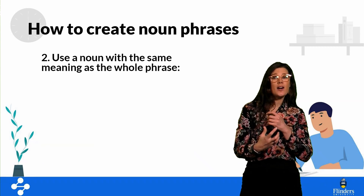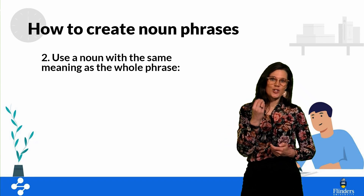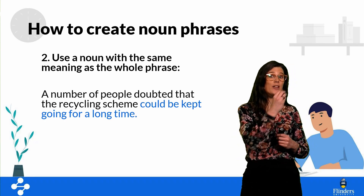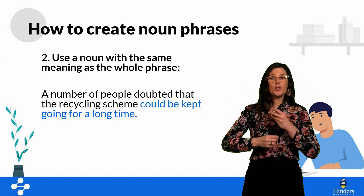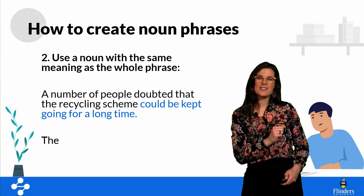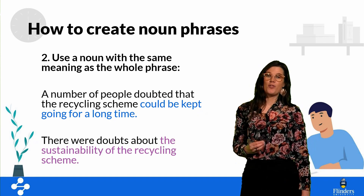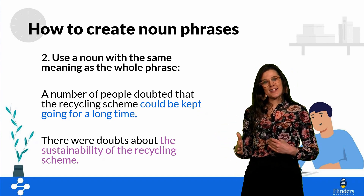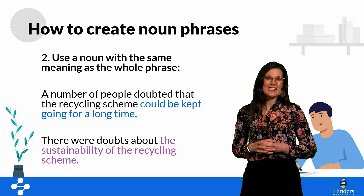The second way is to use a noun with the same meaning as a whole phrase — like finding a noun synonym. For example, 'a number of people doubted that the recycling scheme could be kept going for a long time' becomes 'there were doubts about the sustainability of the recycling scheme.' The noun 'sustainability' has replaced that whole phrase, keeping the writing nice, tight, and specific.